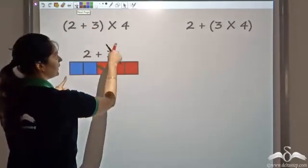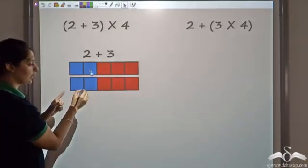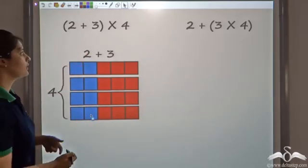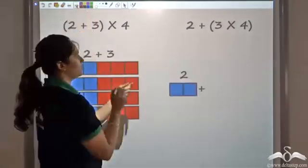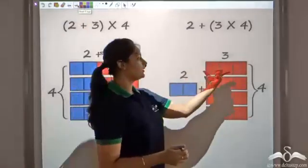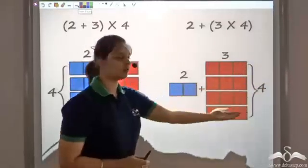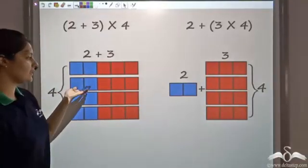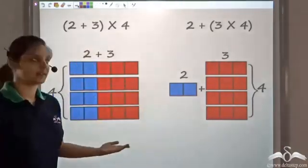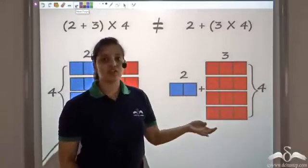This is 2 plus 3 into 4, meaning I add 2 plus 3 a total of 4 times. Now let us look at the other grouping: 2 plus 3 into 4, where I add 3 into 4 means 3 added 4 times, giving 2 plus 3 into 4. Are these two the same? Clearly not — the number of blue boxes in the first is much more than in the second. Hence these two are not the same, so a combination of addition and multiplication is not associative.